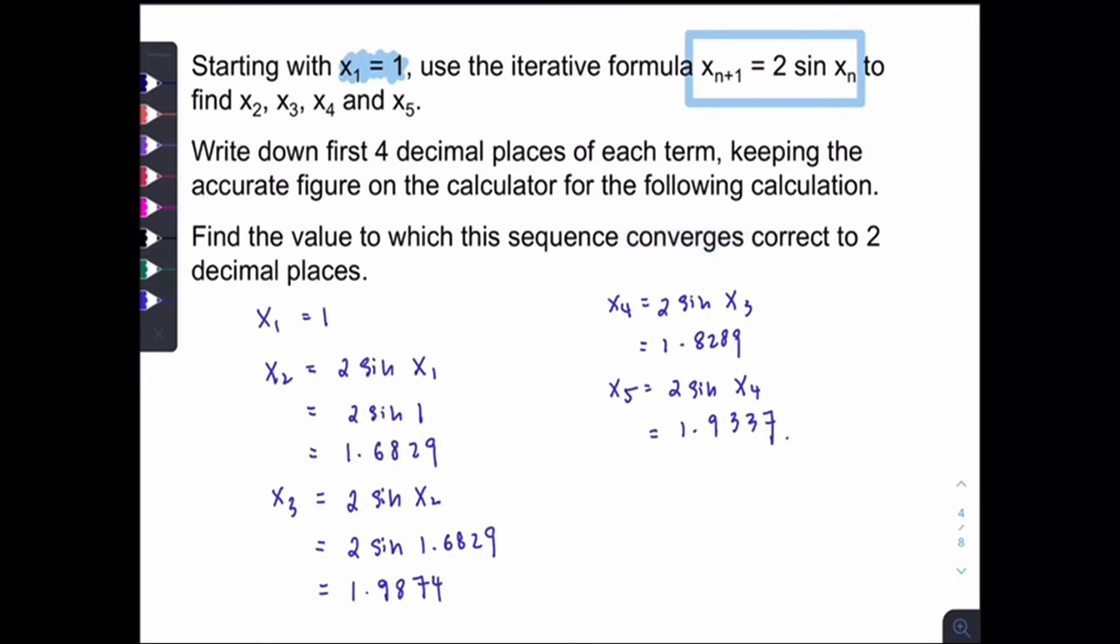Let's try to answer the last part here. Find the value to which this sequence converges, correct to 2 decimal places. Which means when you calculate for the x6, x7, x8, x9 and so on, you notice that the number gets closer and closer to a fixed value. So we will say that this sequence actually converges to a fixed value. The fixed value is the answer of this equation.